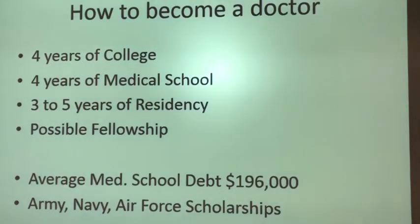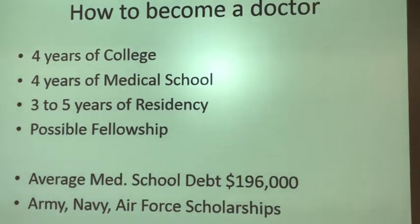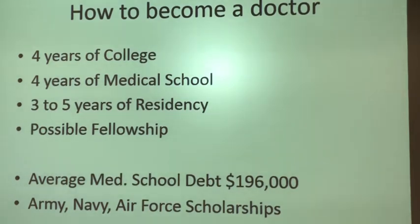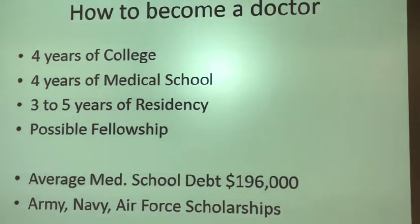I wanted to talk to you about how to become a doctor. You need four years of college, four years of medical school, and then three to five years of residency depending on your specialty, plus a possible fellowship if you're going to sub-specialize — for example, as a cardiologist or cardiac surgeon. Average medical school debt is just below $200,000. But there are scholarships, especially armed forces scholarships — Army, Navy, and Air Force — where they'll pay your way in exchange for four years of military service.